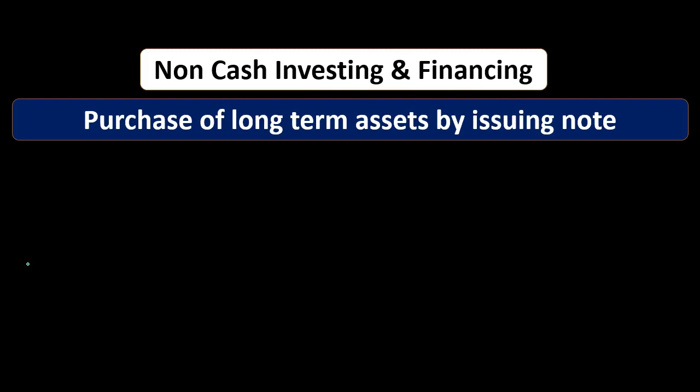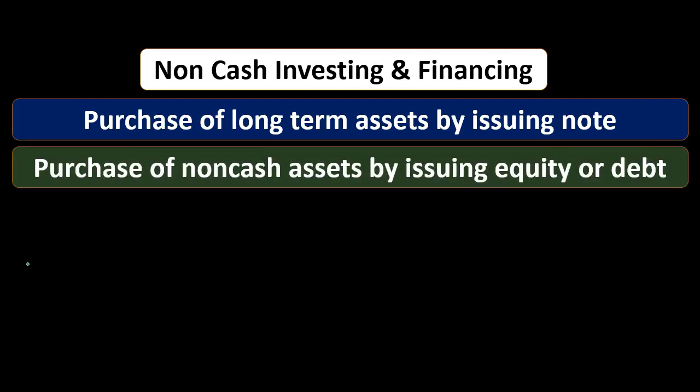The purchase of a long-term asset by issuing a note — you can break that journal entry into two journal entries dealing with cash: receiving cash and then paying cash. Another example would be the purchase of non-cash assets by issuing equity or debt. If we bought some type of non-cash asset and didn't pay cash but issued equity or debt, you can think of that as two transactions: we got the debt, received the cash, and then paid for the non-cash item. If you can think about breaking these up into getting a loan or issuing stock, getting money, and then buying the non-cash item for cash, then that's probably an item we would need to report.